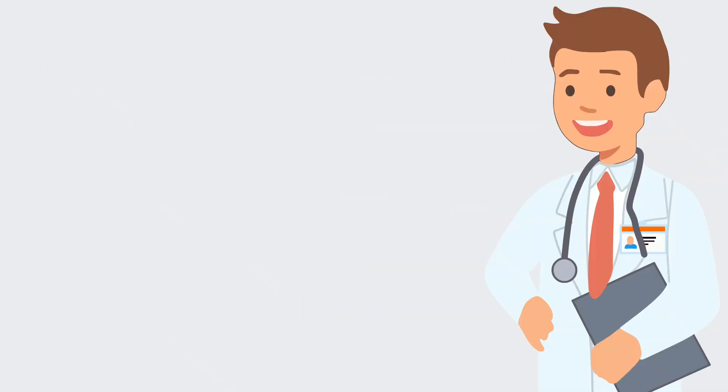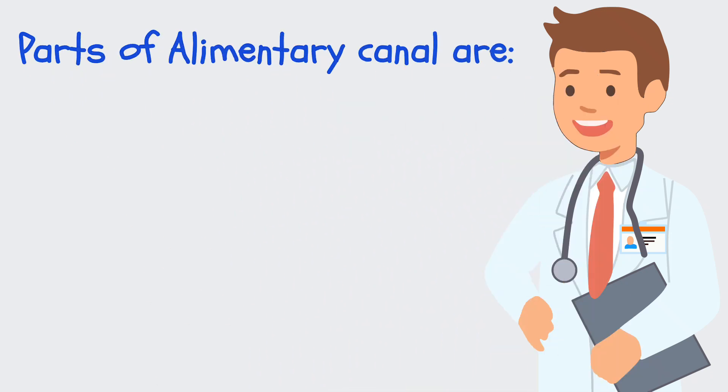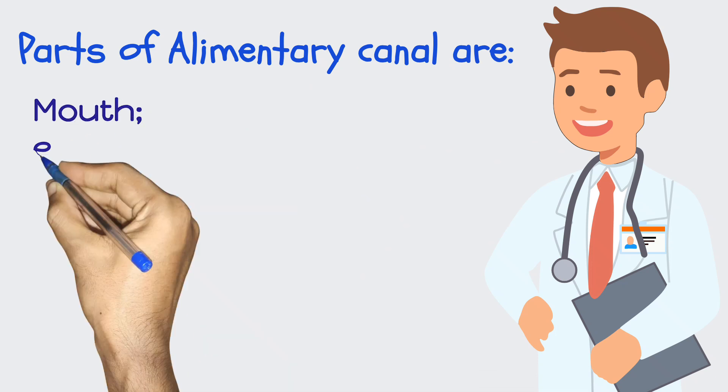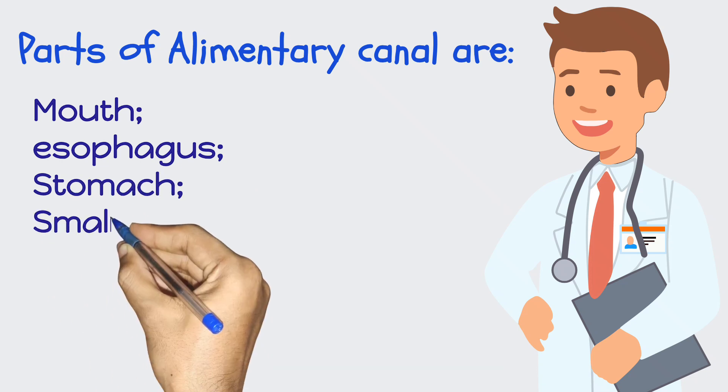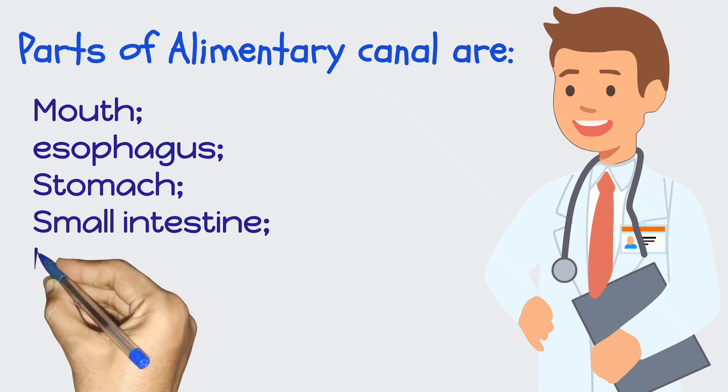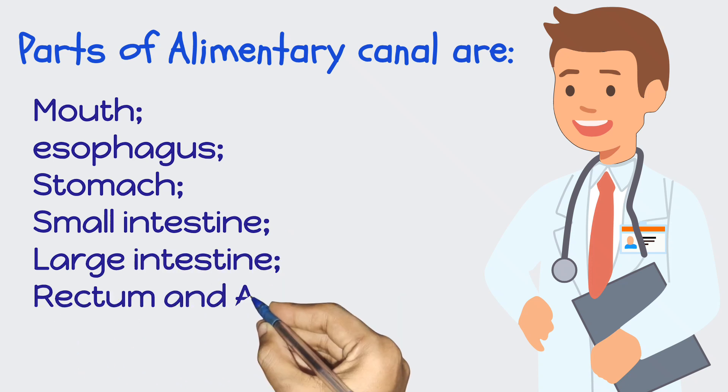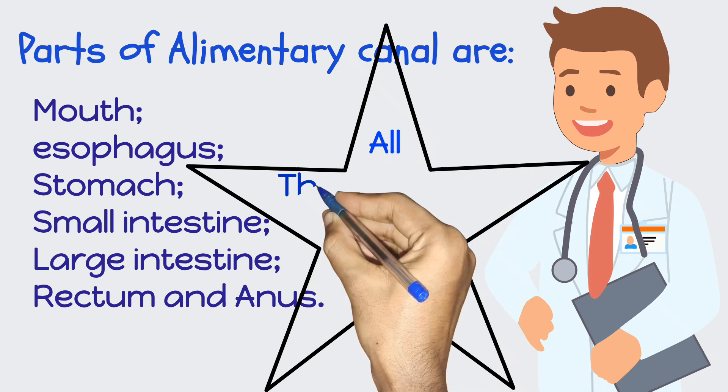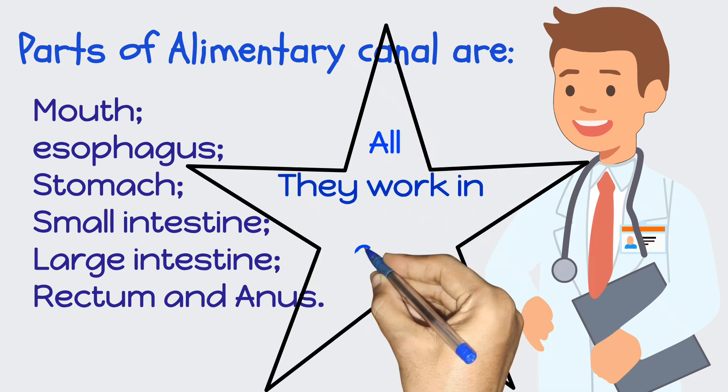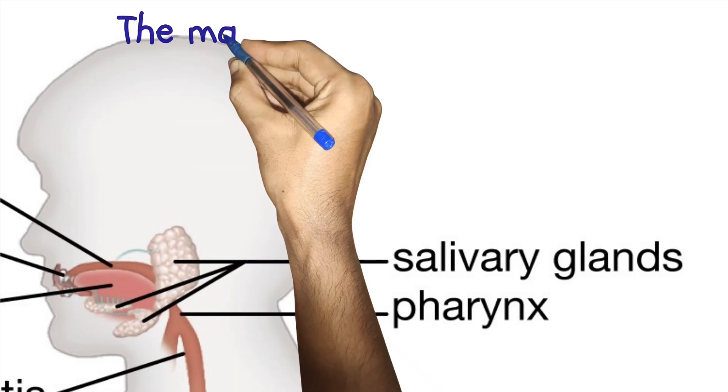We can see also the parts of the alimentary canal. The parts of the alimentary canal are as follows: we have the mouth, which is located in the buccal cavity, esophagus, stomach, small intestine, large intestine, rectum, and anus. All of these organs work together in a chain and digest the food we eat.